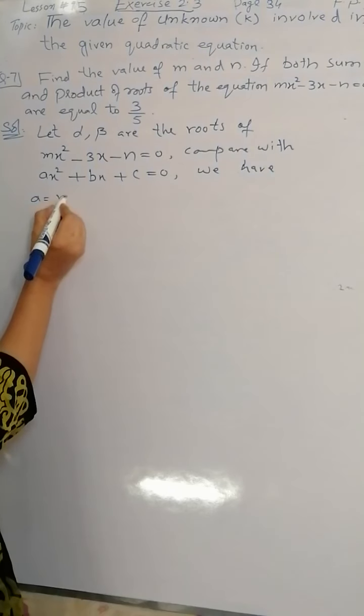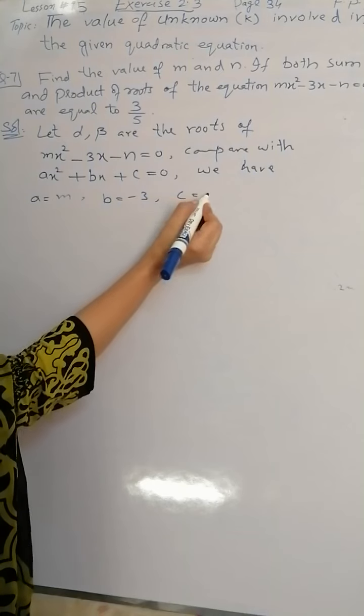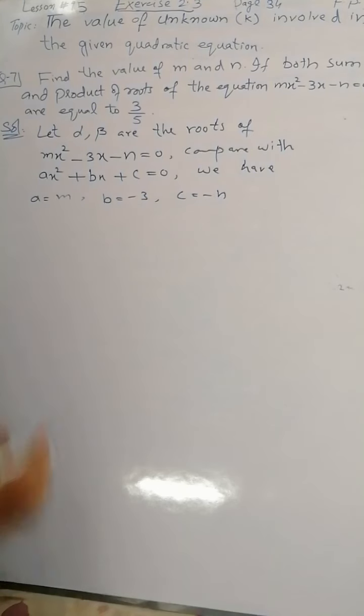a is equal to m, b equals to -3, and c is equal to -n.